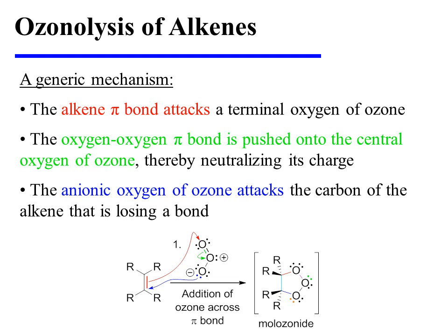Finally, the anionic oxygen of ozone attacks the carbon of the alkene that would otherwise have lost a bond. The initial product is known as a molozonide.